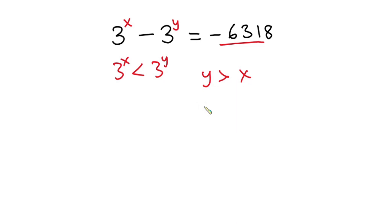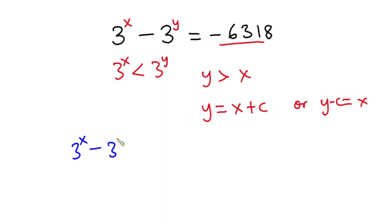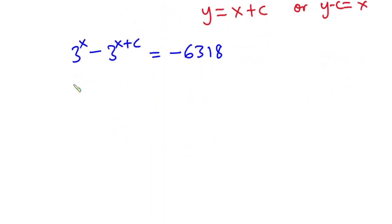We can simply say that y is greater than x. Now the question is: under what circumstance can y be greater than x? Well, y can relate to x when a certain constant, let's call it c, is added to x. So we focus on the equation y equals x plus c. Wherever we see y in the original equation, we substitute x plus c, giving us 3 to the power x minus 3 to the power (x plus c) equals negative 6318.